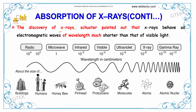Regarding the discovery of X-rays, Schuster pointed out that X-rays behave as electromagnetic waves of wavelength much shorter than visible light. In the electromagnetic spectrum you can see: radio waves, microwaves, infrared, visible light, ultraviolet, X-rays, and gamma rays.